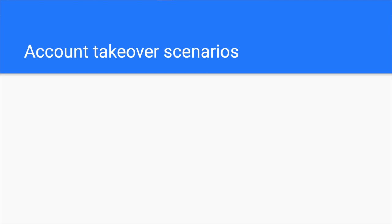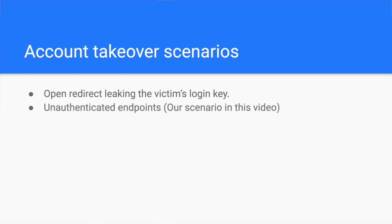For example, you might have an open redirect vulnerability which leaks the user token upon logging. In this scenario, an attacker can take over the victim's account by simply clicking on a malicious link. The scenario I will describe in the remaining of this episode involves unauthenticated endpoints which, once combined, result in a full account takeover without user interaction.